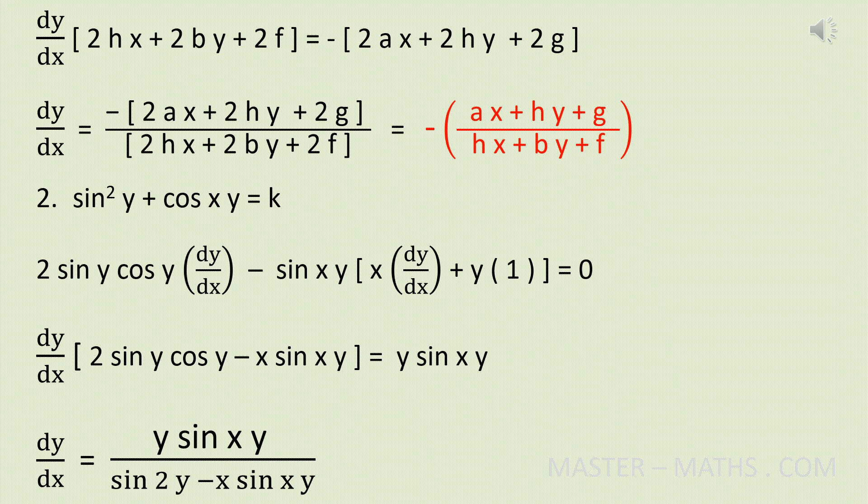Second sum: sin squared y plus cos of xy equals k. In this sum also, to find dy by dx, differentiate each term with respect to x. In both terms, on differentiating you have to apply the chain rule — remember that. First term: sin squared y. On differentiating it with respect to x, you get 2 sin y cos y into dy by dx.